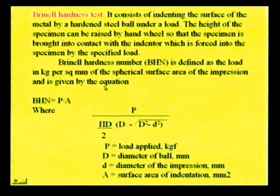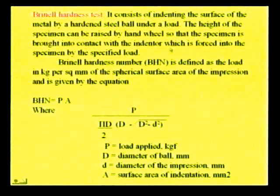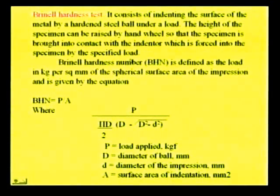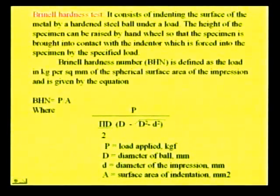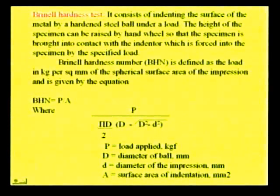In the Brinell hardness test, it consists of indenting the surface of the metal by a hardened steel ball under load. The height of the specimen can be raised by a hand wheel so that the specimen is brought into contact with the indenter, which is forced into the specimen by the specified load. The Brinell hardness number (BHN) is calculated using the equation: BHN = P/A, or P divided by [π·D/2 × (D − √(D² − d²))], where P is the load applied in kg, D is the diameter of the ball in mm, d is the diameter of impression in mm, and A is the surface area of indentation in mm².